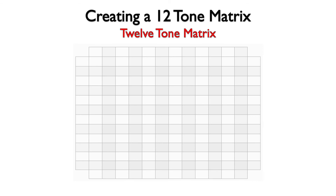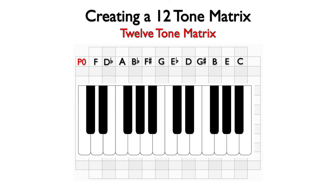Schoenberg created a 12-tone matrix to organize the original row and all of its derivations. Here is a 12-tone matrix with only our original row included. This row will always be presented first in the composition and is referred to as the prime zero. Since our row begins on F, we will call it P0, with 0 representing the F note. On the piano, we will find the numbers for each note of the chromatic scale by numbering the half steps beginning on F. These numbers will be used to help name the other versions of the row.